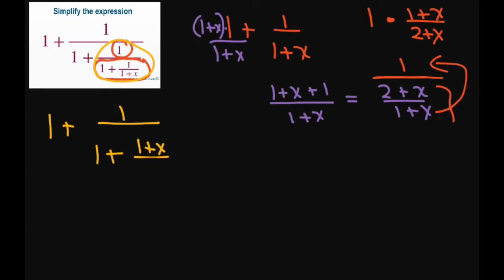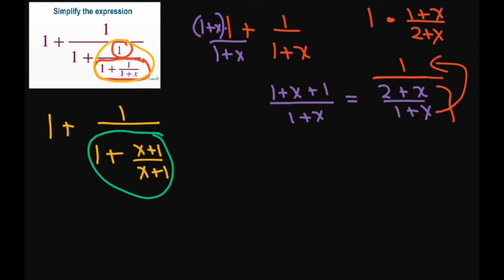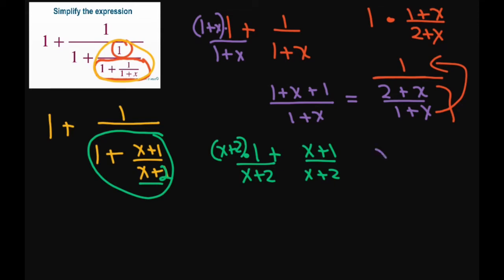Let's write this with x first: so this is x plus 1 over x plus 2. Now let's look at this piece. Our common denominator is x plus 2. So that's going to be x plus 2 plus x plus 1 divided by x plus 2 — we multiply the numerator by x plus 2 for the common denominator. When you add this up, we get x plus 2 plus x plus 1 divided by x plus 2, which gives us 2x plus 3 divided by x plus 2.